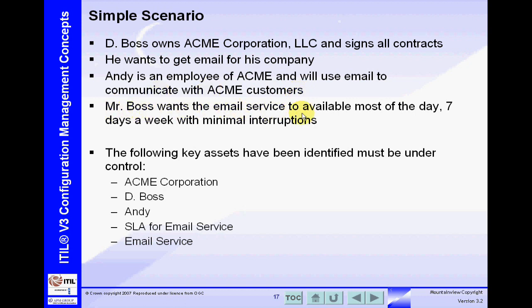Mr. Boss wants the email service to be available most of the day, 7 days a week, with minimal interruptions. In this simple scenario, we've identified 5 key assets that we want under control. Things that we want under control are called configuration items, and they belong in the configuration management database. Here we have the Acme Corporation, D-Boss, Andy, the SLA for the email service, and the email service itself.